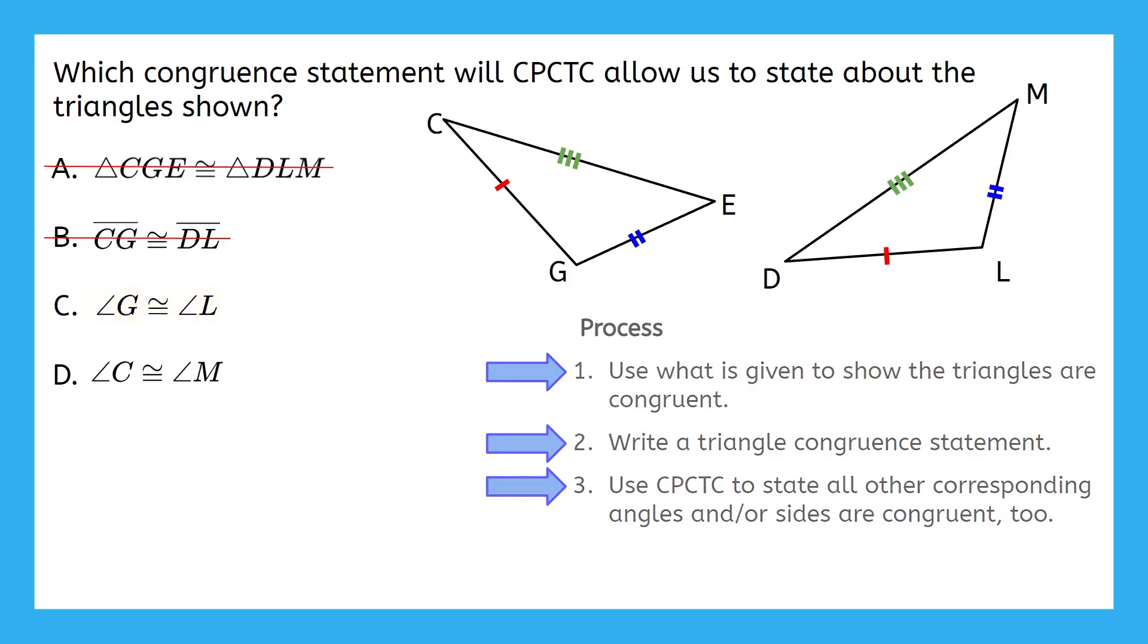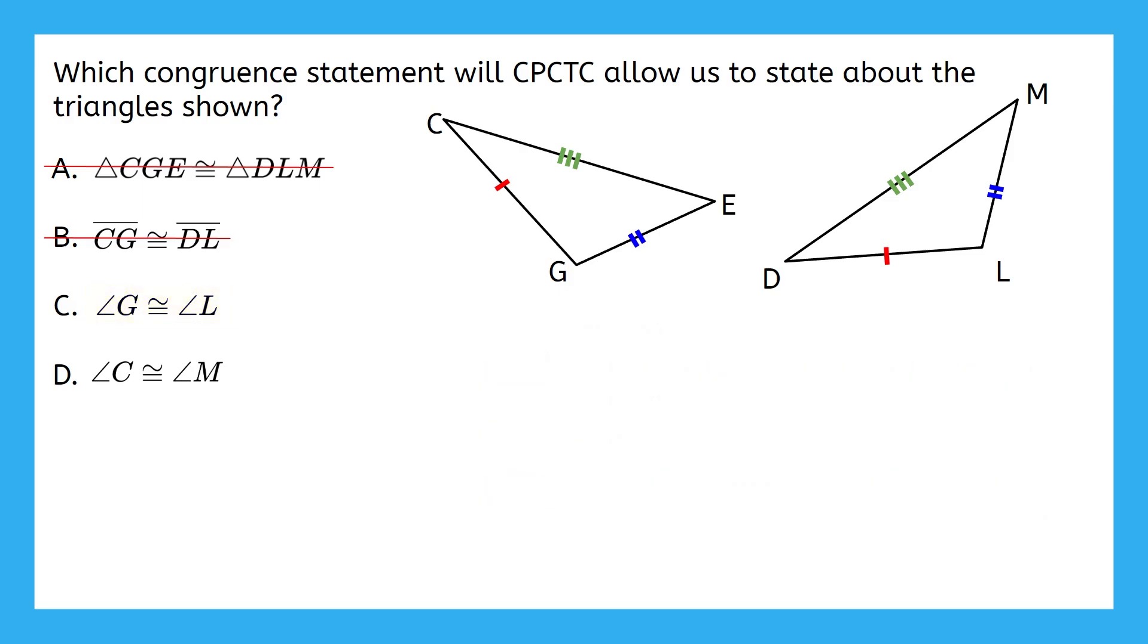Well, let's double check that last answer choice just to make sure that we're correct. Part D says that angle C is congruent to angle M. Well, these aren't even corresponding angles. Angle C actually corresponds to angle D, so this is definitely not correct. Answer choice C is our final answer.